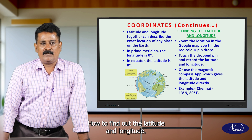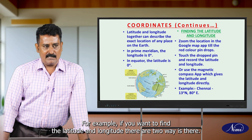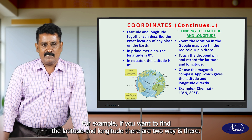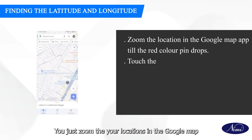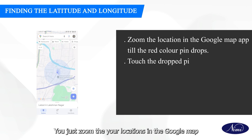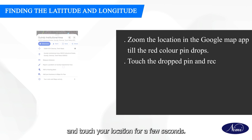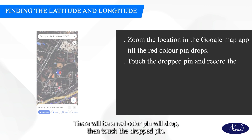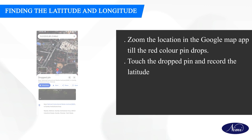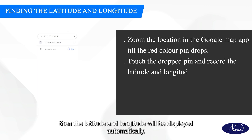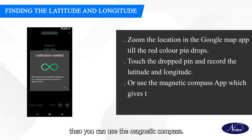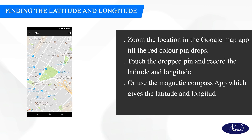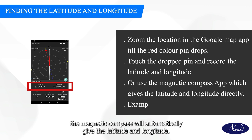Next question: how to find out the latitude and longitude? There are two ways. One is Google Maps. You can have Google Maps on your mobile phone. You just zoom to your location in Google Maps and touch your location for a few seconds — a red colour pin will drop. Then touch the dropped pin, and the latitude and longitude will be displayed automatically. Another method is if you have the Magnetic Ambers app on your mobile phone, the Magnetic Ambers app will automatically give you the latitude and longitude.